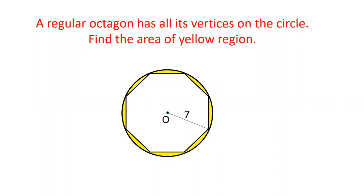Given that there is a circle of radius 7 cm and there is a regular octagon, each of its sides are equal and all its points are on the circle. Let's see how we can solve this question.